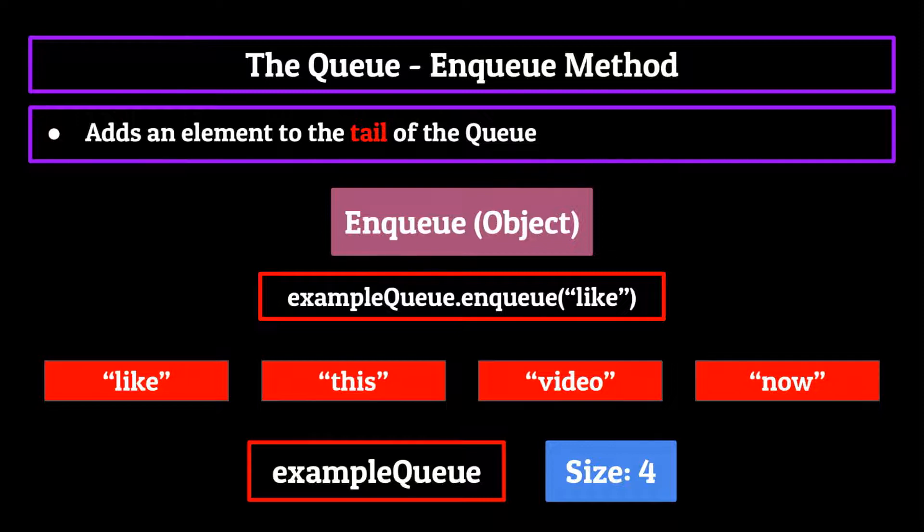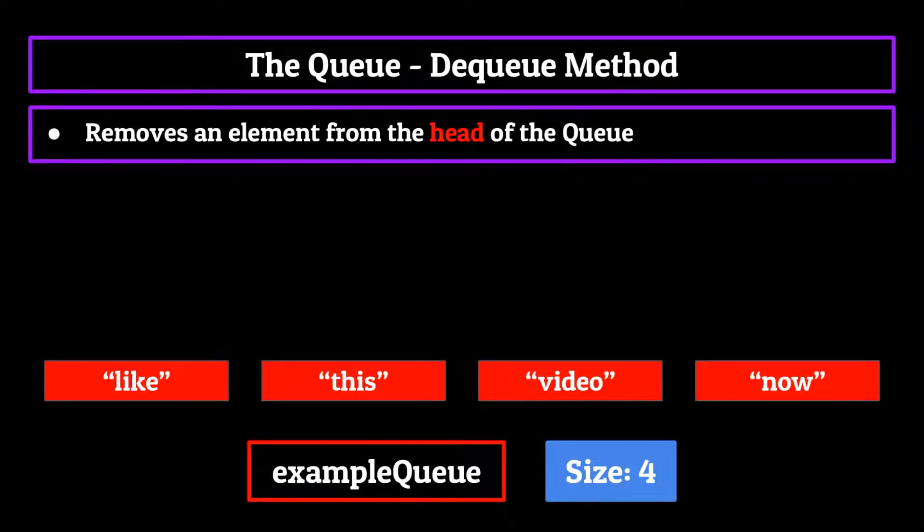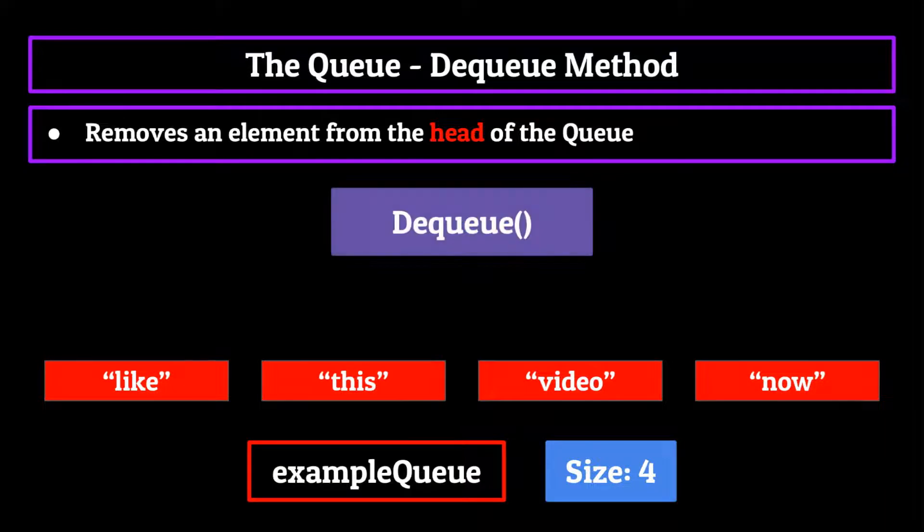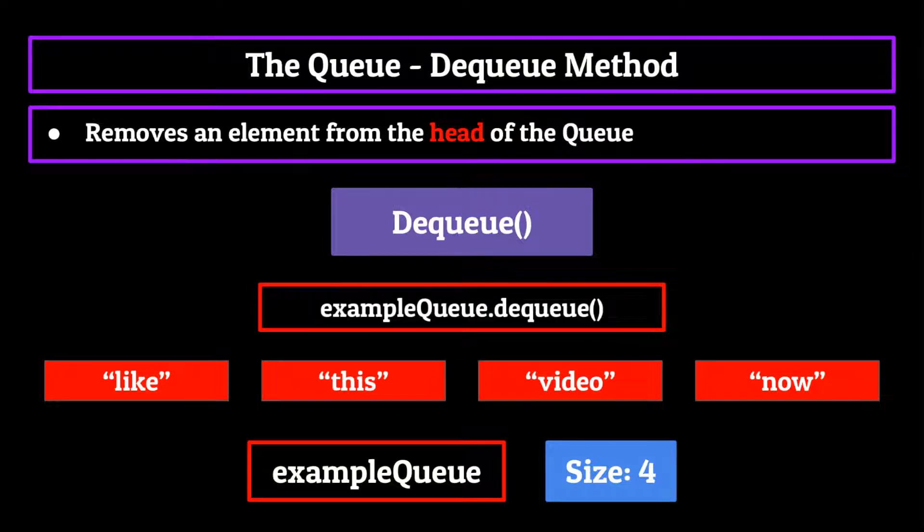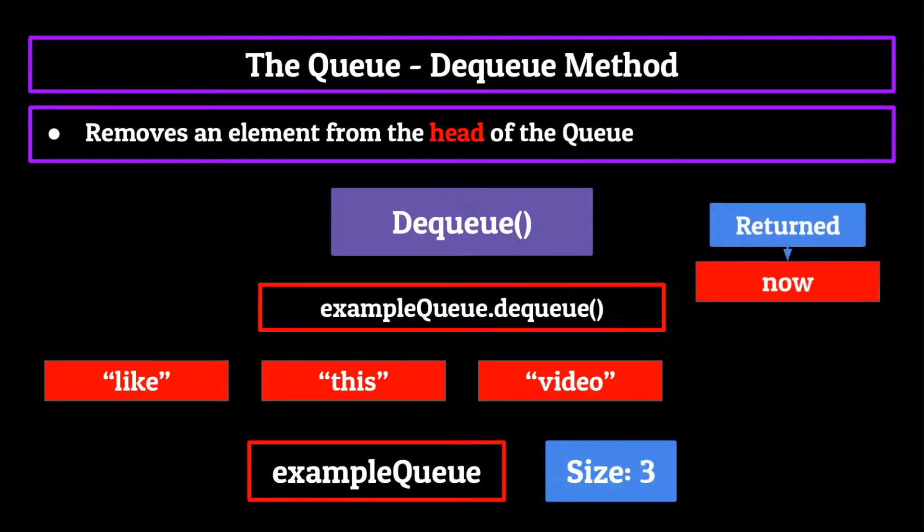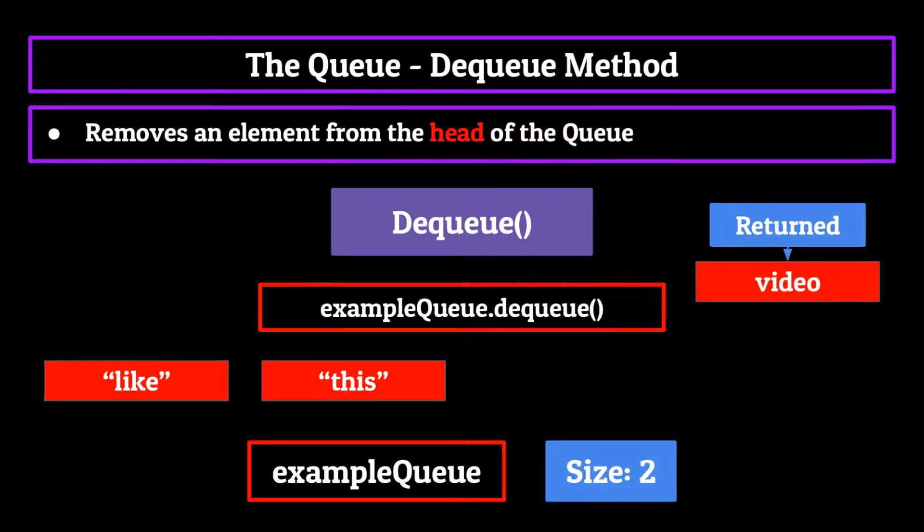Speaking of removing these elements, that takes us perfectly into our next method, dequeue. Dequeue is the method we use to remove elements from the head of our queue. It doesn't take in any arguments and will just return the element that was removed from the queue back to the user. So if we ran a dequeue command on our example queue, you'd see that now is returned back to the user and also removed from the queue, as well as the size has been decreased by one. If we run it again, video is returned and removed from the queue, the size went down by one, you get the idea.